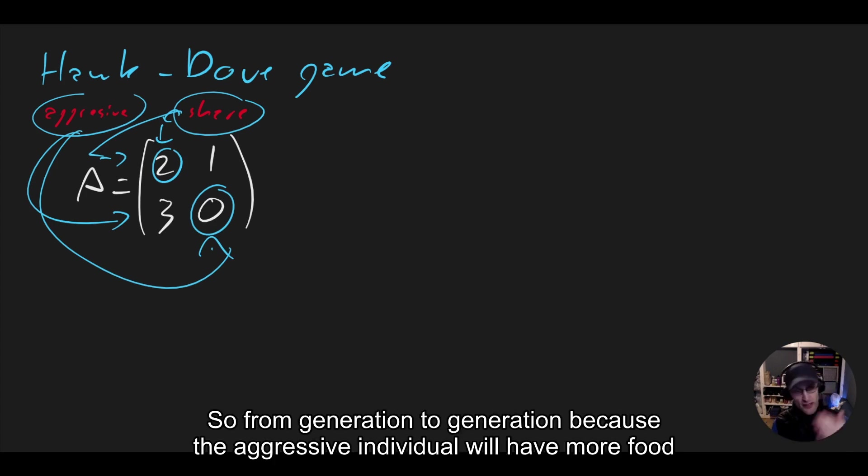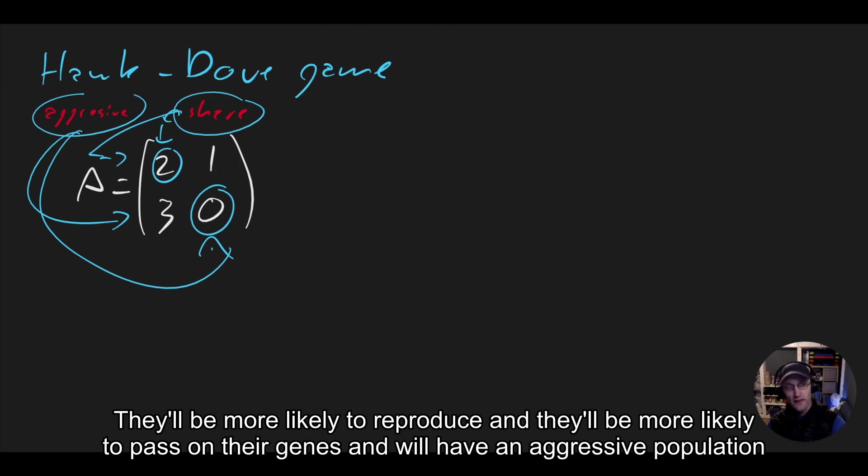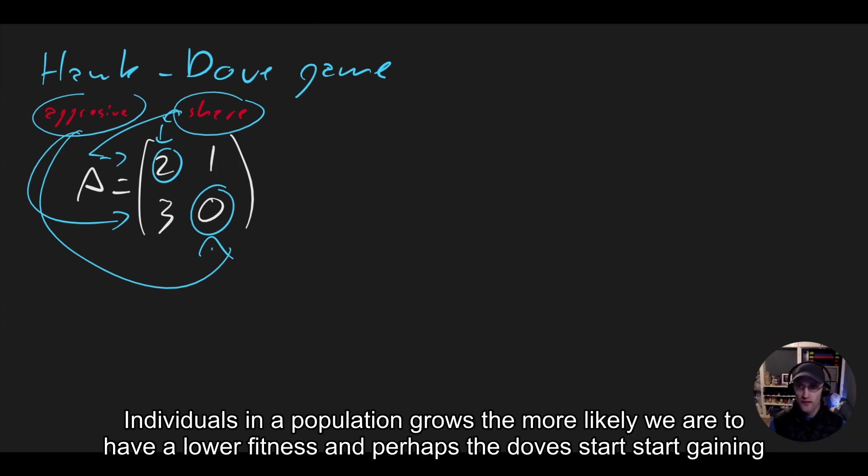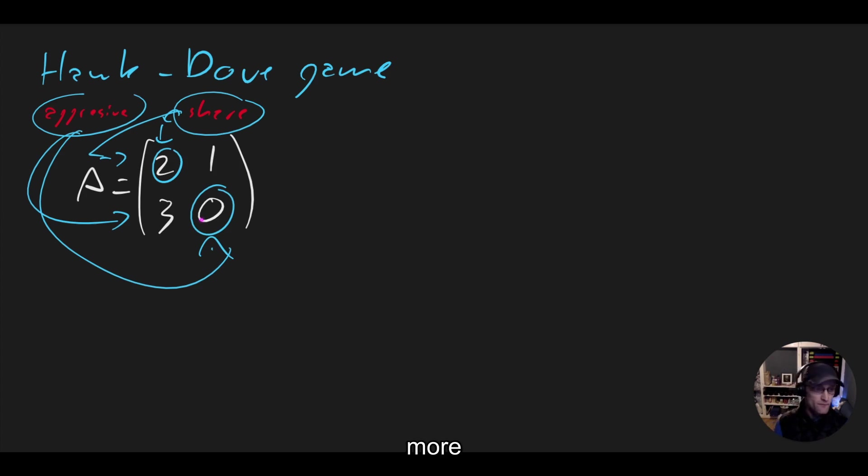Will this aggressive individual take all the food and essentially over time gain more fitness and take over the population? So from generation to generation, because the aggressive individual will have more food, they'll be more likely to reproduce and pass on their genes, and we'll have an aggressive population. But of course, as the number of aggressive individuals in the population grows, the more likely we are to have a lower fitness, and perhaps the doves start gaining more.